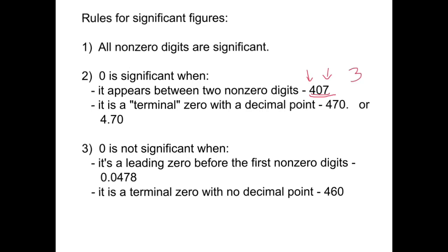A zero is also significant if it is a terminal zero with a decimal point. So here we have 470. with a decimal point at the end — this zero is a terminal zero with a decimal point, so it is significant, giving three significant digits. The zero might also come after the decimal, as in 4.70. It's still a terminal zero and it is significant, so this number also has three significant digits.